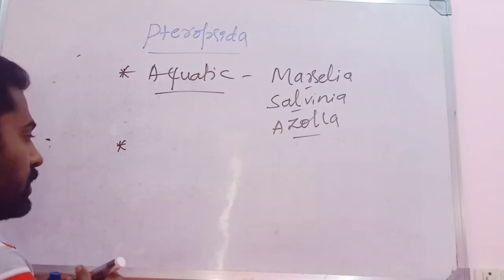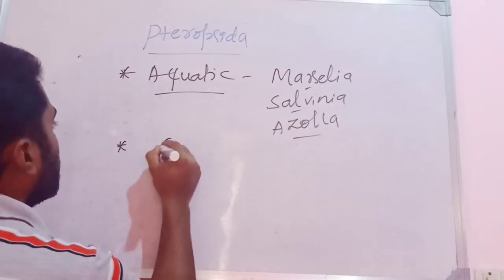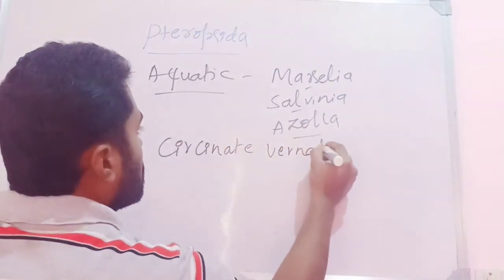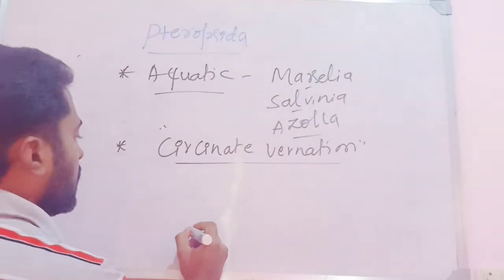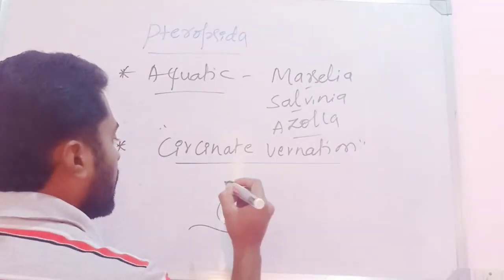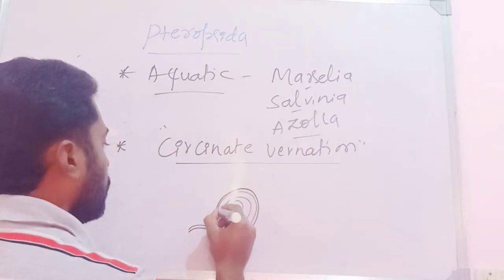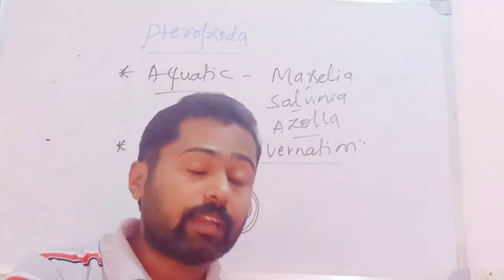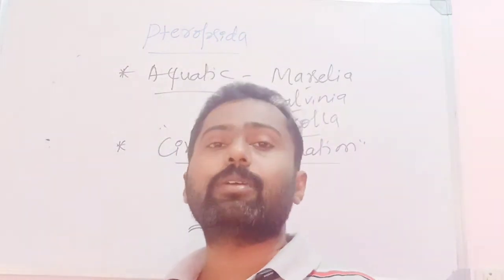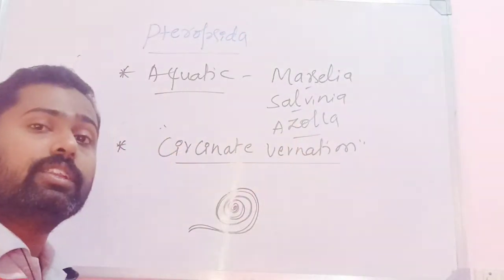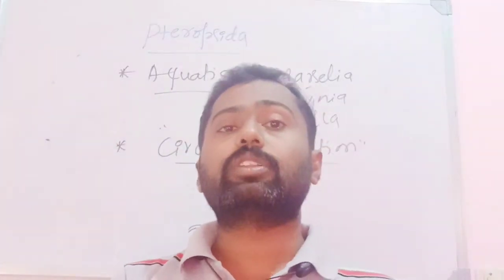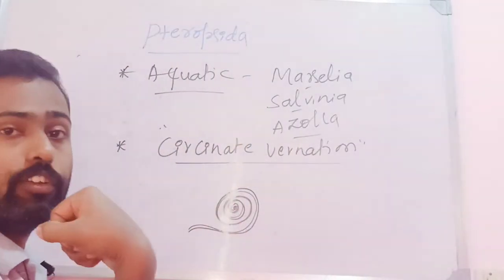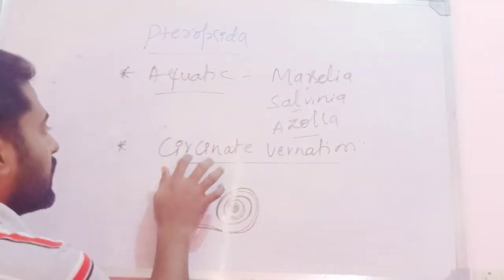An important property of Pteropsida members is circinate vernation — where the younger leaves (fronds) are coiled. This can also be seen in primitive gymnosperms like Cycas. As the leaf develops it unfolds and enlarges, but younger leaves show inward coiling. The rachis is the axis of the compound leaf, and it bears small hair-like structures on its surface called ramenta.